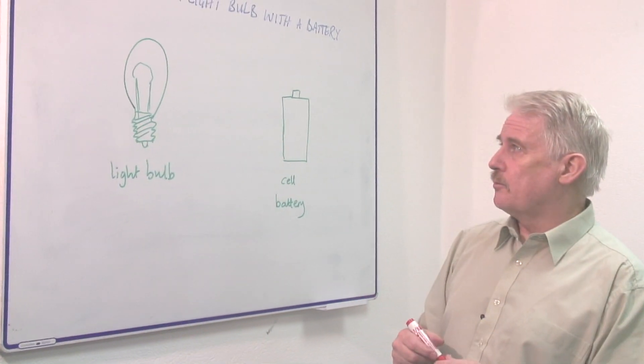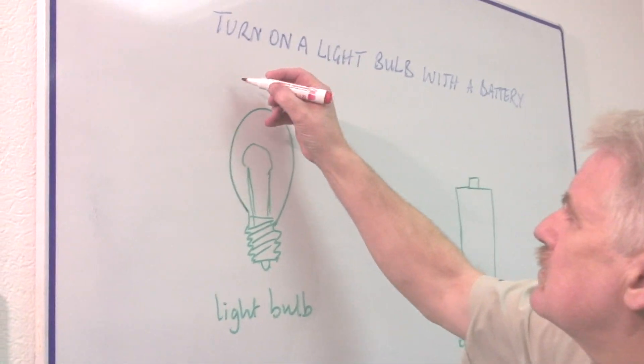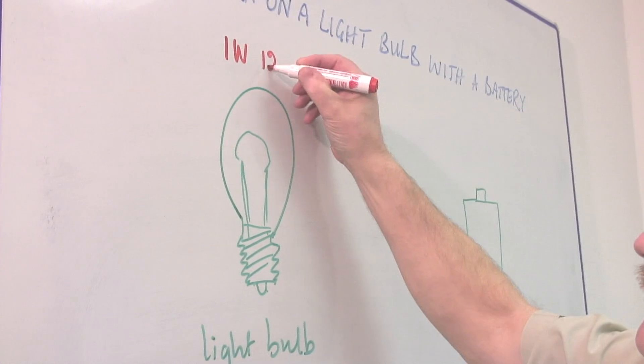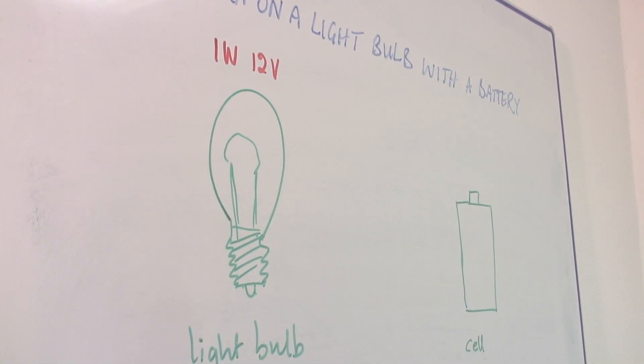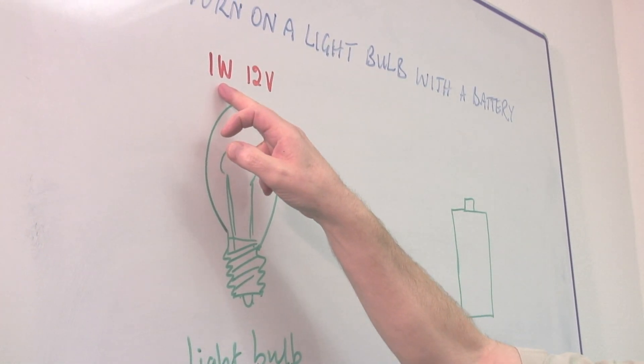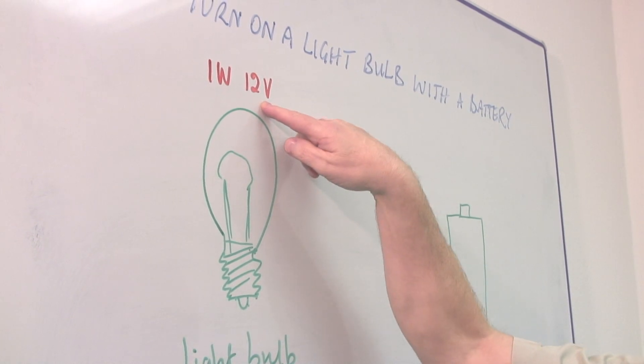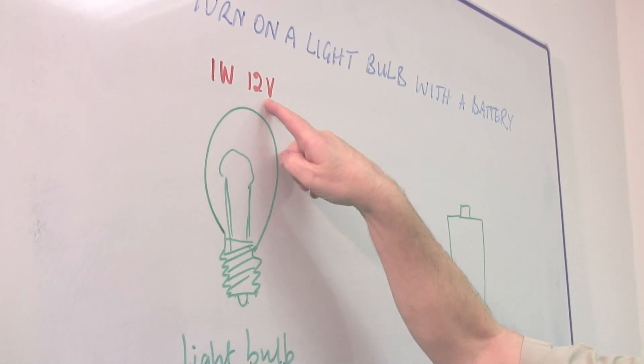Now if I have a light bulb on it, it'll say something like one watt, twelve volts. What that means is the power it uses is one watt, and the voltage it needs is twelve volts. And it'll use one watt at twelve volts.